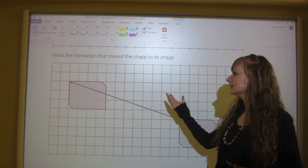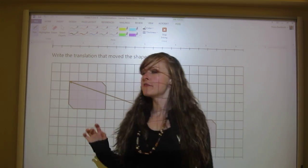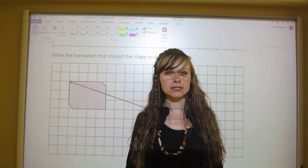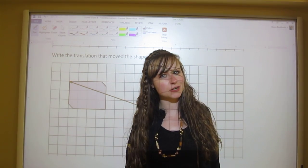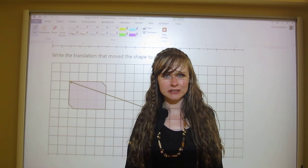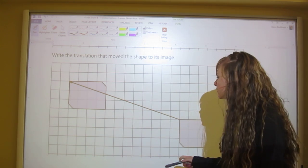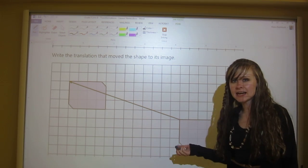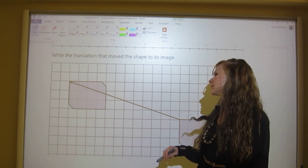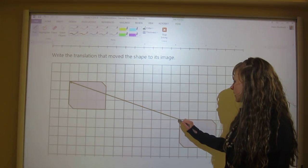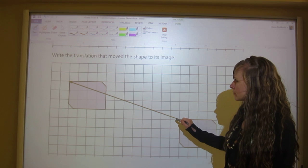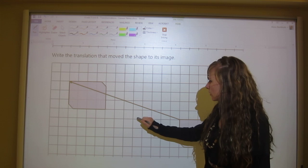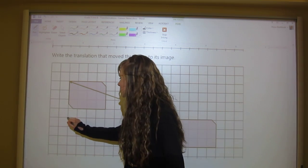You have to write the translation that moves the shape to its image. So you have to say how many squares left or right and how many squares up or down. Pause the video now and try that out and then play again once you're finished. So hopefully you're finished. All you do is you go from the vertex - remember the geometry unit - the vertex that we have here. Then we need to see left or right first. We're going to count: one, two, three, four, five, six, seven, eight, nine, ten, eleven, twelve.